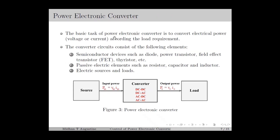We start with the power electronic converter, for which the basic block diagram is given in Figure 3. Based on the source and load, the converter can be DC to DC, DC to AC, AC to DC, or AC to AC. The basic task of the power converter is to convert electrical power according to the load requirement. Power equals voltage times current, and similarly the output power equals the output voltage times the output current. To control the output power, we can control either the output voltage or the output current.